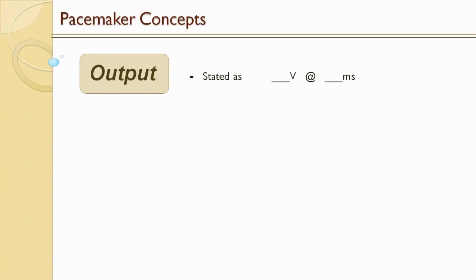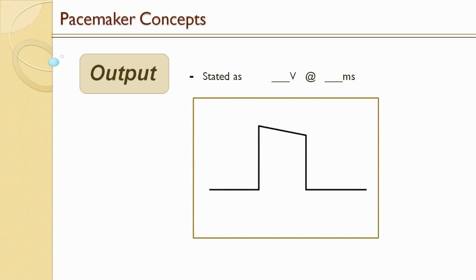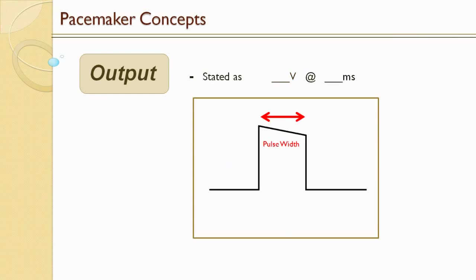Output is stated as a number of volts and a number of milliseconds. If we were to draw out the output, the vertical portion is the voltage and represents our amplitude. The horizontal portion is the pulse width, stated in milliseconds. So when we talk about output, we're really talking about the amount of voltage delivered over time. The reason why there is a dip in the voltage over time is because the pacemaker can't maintain a constant voltage — if we start out pacing at 3 volts, it'll probably end up at about 2.7 or 2.8 volts.